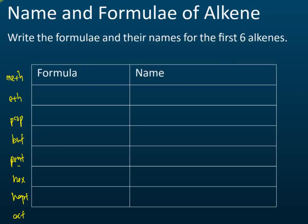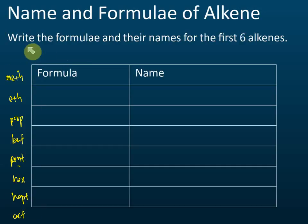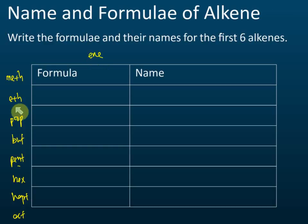We name organic compounds according to the number of carbons in the molecule. If you know the names of polygons, you don't need to memorize so many names. For alkene, the code is followed by the suffix '-ene', while for alkane the suffix is '-ane'.